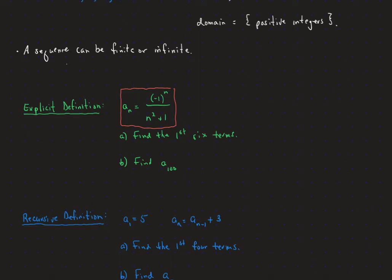To find the first six terms, we start with n equals 1. So a sub 1 is found by plugging in 1 everywhere we see n. Negative 1 to the first is negative 1, and 1 squared plus 1 is 2, making the first term negative one-half. For the second term, negative 1 squared is positive 1, and 2 squared plus 1 is 5, giving one-fifth. The third term gives negative 1 over 10, and a sub 4 is positive 1 over 17, a sub 5 is negative 1 over 26.